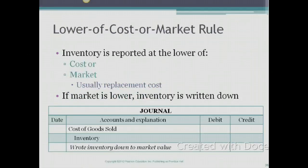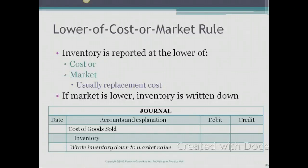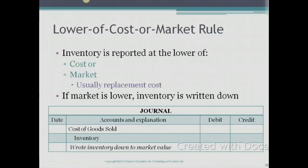Representational Faithfulness tells us that we need to make sure that our financial statements are fair and accurate. For financial statements to be fair and accurate, we need to report the true nature of the financial statements. Because of Faithful Representation, we have a rule that comes into play for inventory which we call the Lower of Cost or Market rule.